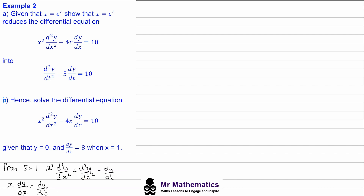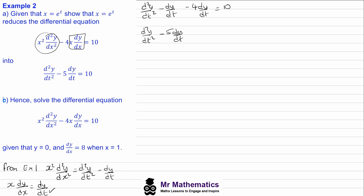We can now substitute these into our original differential equation, replacing the x²·d²y/dx² term and the x·dy/dx term. So d²y/dt² minus dy/dt, minus four times dy/dt, equals 10. We've got a negative dy/dt here and four more of them, so we simplify to get d²y/dt² minus 5·dy/dt equals 10.